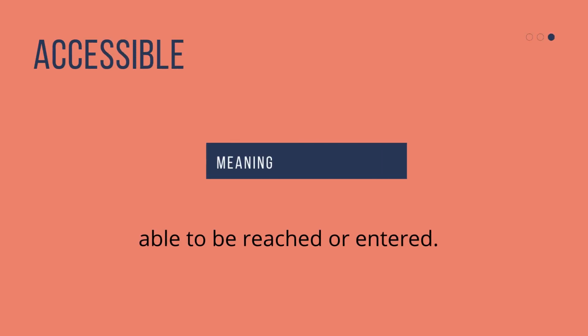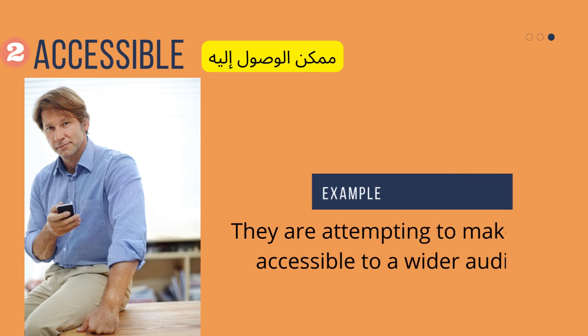The second word is accessible — the verb is access, to have access to or give access to. It means being able to be reached or entered — reached by phone, by email, or whatever — or if it is a place or a website. They are attempting to make opera accessible to a wider audience.